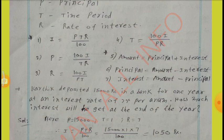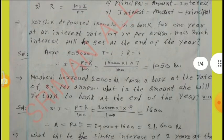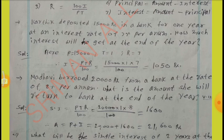Example: Karthik deposited Rs.15,000 in a bank for one year at an interest rate of 7%. How much interest will he get at the end of the year? Here, P equal to Rs.15,000, T equal to one year, R equal to 7%. By substituting these values in the formula I equal to PTR by 100: 15,000 into 1 into 7 by 100. By cancellation, we get I equal to Rs.1,050.